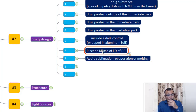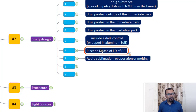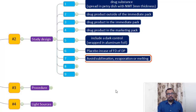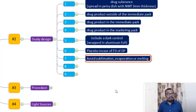This particular point — number six — is applicable during method development or method validation, but may not be required when simply evaluating photostability impact. Point number seven: it is also very important to avoid physical changes to the sample like sublimation, evaporation, or melting, and this must be avoided as much as possible.